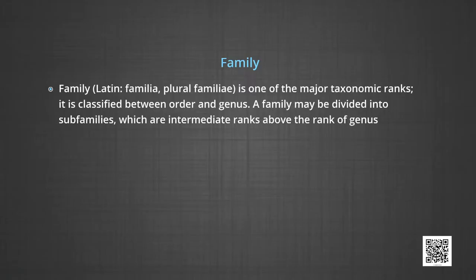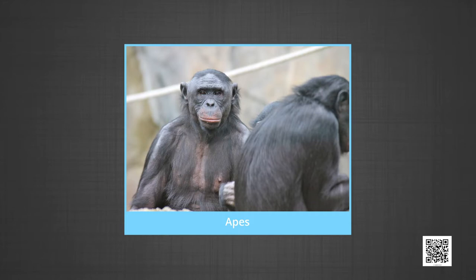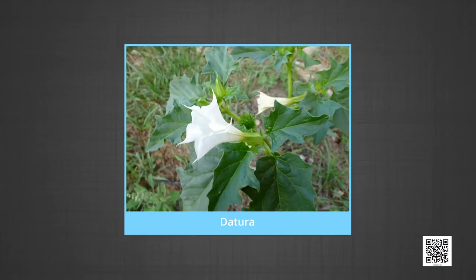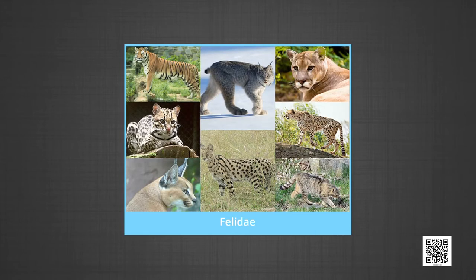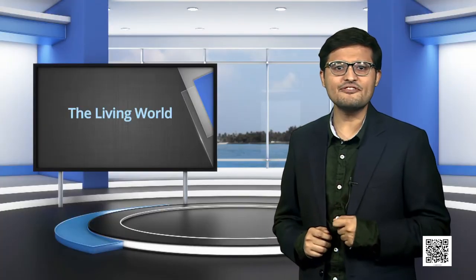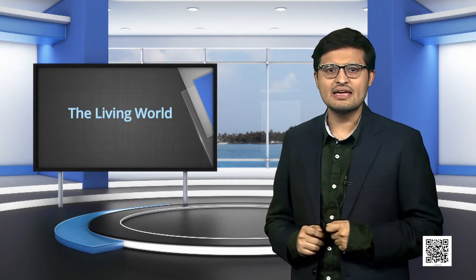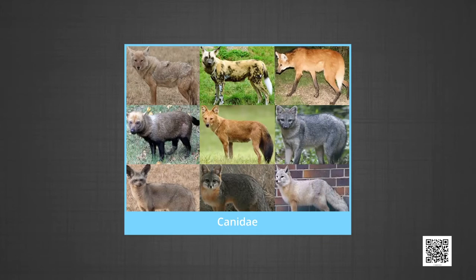Family is one of the major taxonomic ranks, classified between order and genus. A family may be divided into sub-families, which are intermediate ranks above genus. Family designates a category of classification that is fairly precise. For example, family would include categories such as apes and lemurs within the primate order. Families are categorized on the basis of both vegetative and reproductive features of plant species. Among plants, three different genera — Solanum, Petunia and Datura — are placed in the family Solanaceae. Among animals, genus Panthera, comprising lion, tiger and leopard, is placed along with genus Felis (cats) in the family Felidae. Cats and dogs are separated into two different families, Felidae and Canidae respectively.